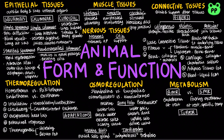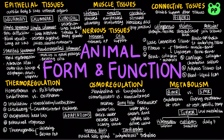Torpor refers to a state of low metabolism in animals. Hibernation is long-term torpor during winter when the weather is cold and food is scarce; animals maintain low body temperature and metabolic rate. Estivation is long-term summer torpor. Some animals exhibit daily torpor, mostly adapting to their feeding patterns. Acclimatization refers to a gradual process by which an animal adjusts to changes in its external environment.